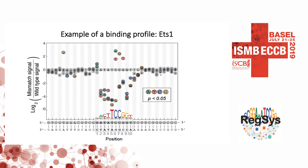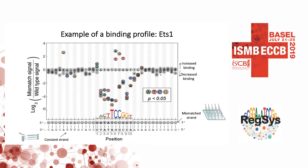Here's what the data usually looks like — an example of our results for ETS1. At the bottom is the constant strand, and at the top is the strand with mismatches. We compare every mismatched strand against the parent wild-type strand, which gives us a protein signal readout. Anything above this zero line shows increased binding, whereas things below show decreased binding. For example, a mismatch at the eighth position in the motif decreases binding, while most mismatches in the center either increase or decrease binding depending on position.